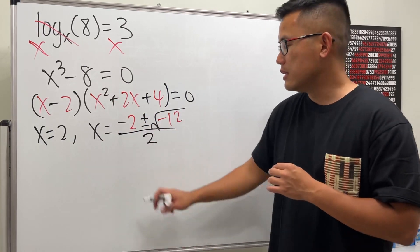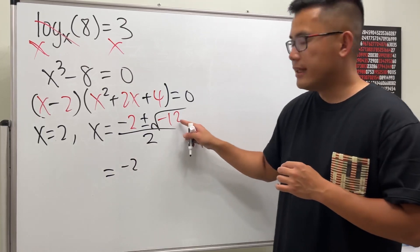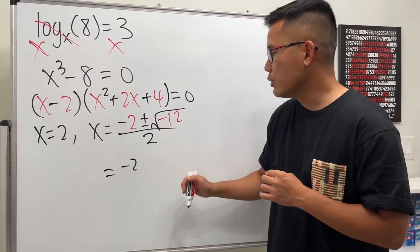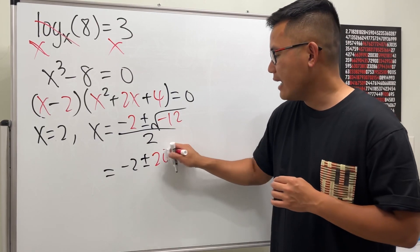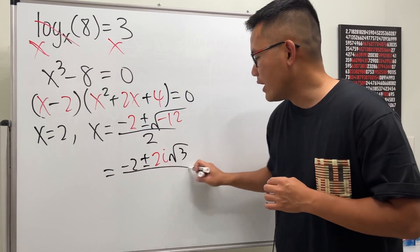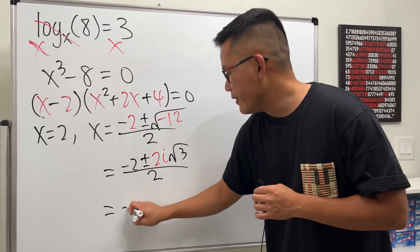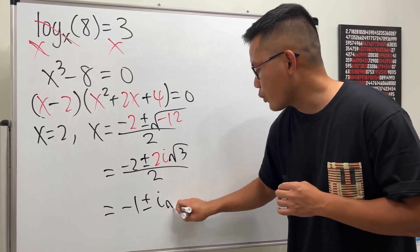And we can actually reduce this because this right here is negative 2. And then let's break this down as 4 times 3. And then square root of 4 is equal to 2, and we have the plus or minus. We have the 2, but it's a negative inside, so we have the i, and then we have the square root of 3, and all divided by 2. So this right here is equal to negative 1 plus or minus i square root of 3.